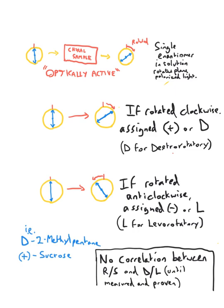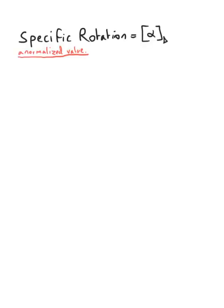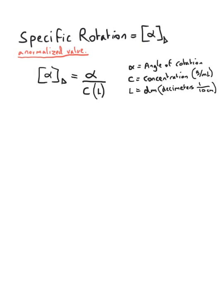But back to optical activity. We talk about optical activity using specific rotation. Specific rotation, or this alpha bracketed with a lowercase d, is a normalized value. It equals the angle of rotation divided by the concentration times the distance traveled by the light through the sample.